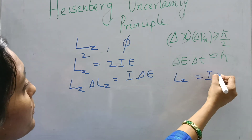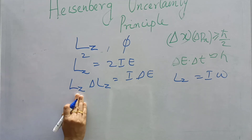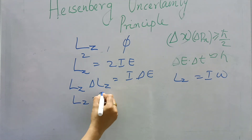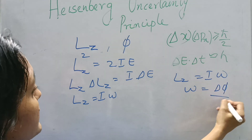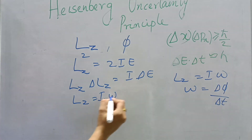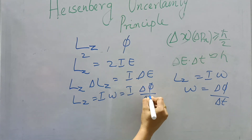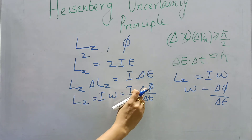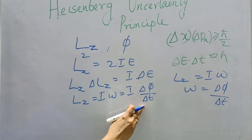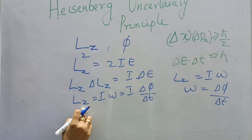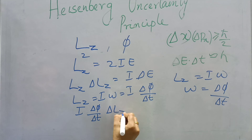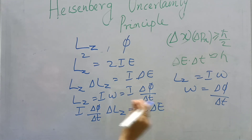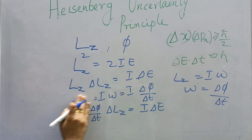We know that L = I·omega, and omega = delta phi / delta t. So L = I·(delta phi / delta t), which means I·delta phi / delta t = delta L = I·delta E. Substituting, delta L corresponds to I·delta phi / delta t.